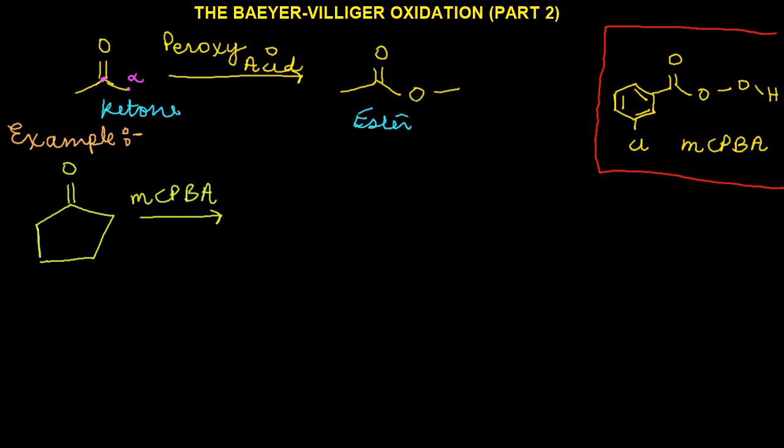So this carbon over here — the alpha carbon — migrated over to this new oxygen we've added, rather than still being bonded to the carbonyl carbon. Before we delve into the deeper subject of regiochemistry regarding this reaction, let's look at an example of a symmetrical ketone and see what product we could get. I encourage you to pause this video and figure out what the answer should be.